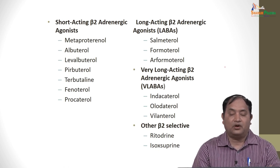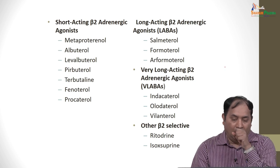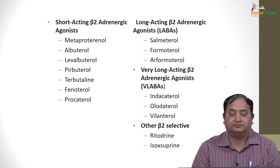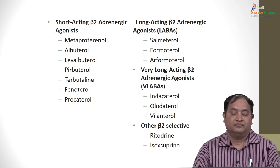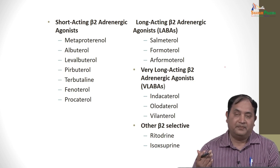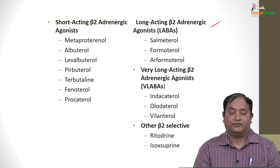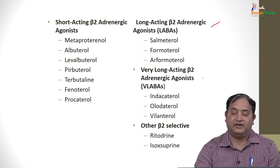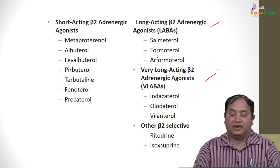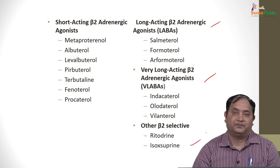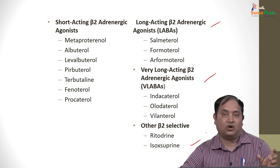Short-acting beta 2 adrenergic agonists include metaproterenol, albuterol, levalbuterol, pirbuterol, terbutaline, fenoterol, and procaterol. Long-acting beta 2 agonists include salmeterol, formoterol, and arformoterol. Very long-acting beta 2 agonists include indacaterol, olodaterol, and vilanterol. Beta 2 agonists selective for uterine use include ritodrine and isoxsuprine. So there are various agonists on alpha 1, alpha 2, or beta 2 with short, long, and very long duration of action.